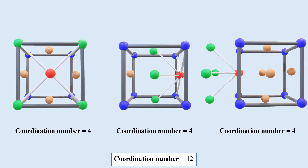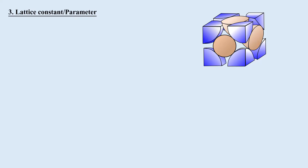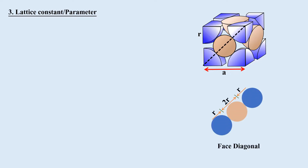Lattice parameter: The lattice parameter of any lattice is the length along which the atoms are most closely packed. Assuming all atoms in the FCC unit cell have the same radius R and the length of the cubic cell is A — since only the face-centered atom is attached to its neighboring atoms and the face is a square — the face diagonal will be √2·A. In terms of R, √2·A = 4R. Therefore, A = 4R / √2. This is the lattice parameter of the FCC unit cell.